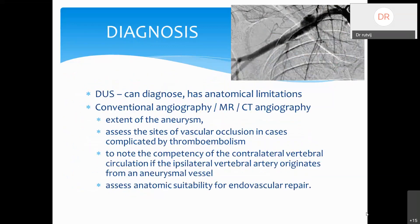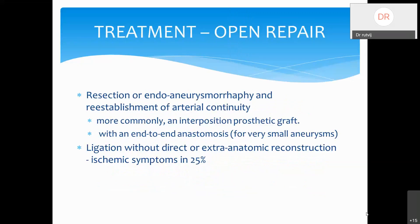Diagnosis uses the same modalities as discussed previously. Doppler ultrasound can diagnose but has anatomical limitations especially in arch vessels. Conventional angiography is the gold standard; CT angiography is the most preferred and minimally invasive method. CT angiography can define the extent of the aneurysm, identify access sites, assess distal circulation, evaluate distal reformation if there is thromboembolism, assess competency of the vertebral circulation — very important in subclavian artery aneurysms — and determine anatomical suitability for endovascular repair.